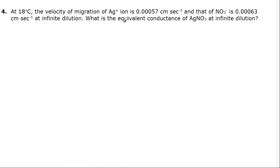Question 4: we are supposed to find the equivalent conductance of silver nitrate at infinite dilution. That means we are supposed to find lambda knot — the equivalent conductance to be calculated.